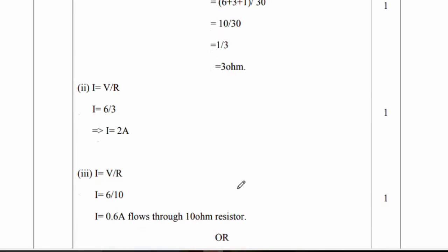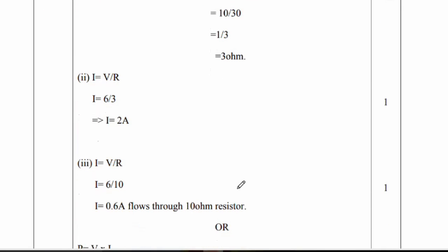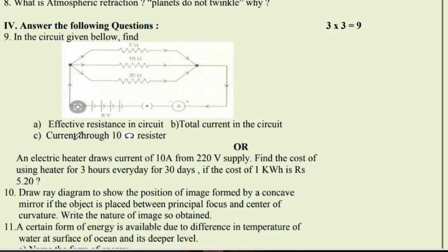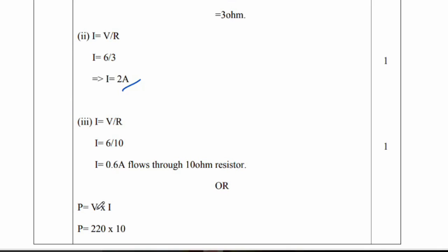Next, calculate I. We have ohm's formula, I is equal to V by R. So I is equal to 2 ampere. Next, our question is 10 resistors, current through 10 resistors. So I is equal to V by R, R place will be 10, we will get I is equal to 0.6A flows through 10 ohm resistors.